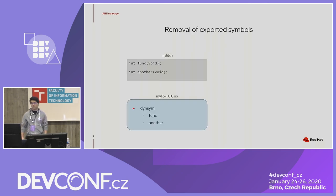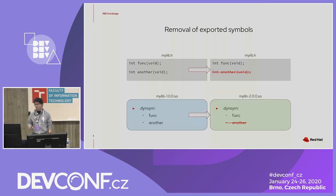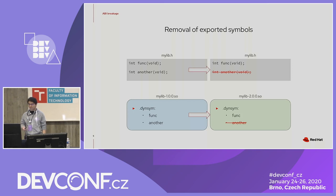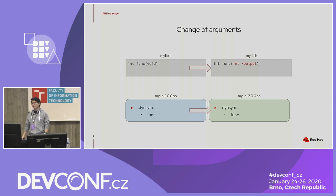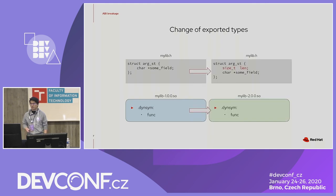Some examples of what would break the ABI: if you remove one exported symbol, it would break the ABI because any software depending on that API would just break. If you change arguments, that could break during runtime — it wouldn't change the exported symbols, but it would change the behavior. The same applies to changes of exported symbols — it could break during runtime.